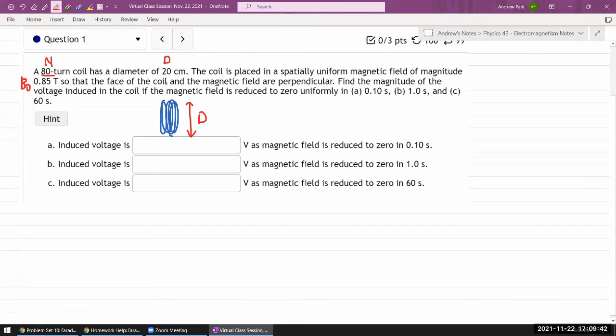The coil is placed in a spatially uniform magnetic field of some magnitude. Let me call this B naught. So that the face of the coil and the magnetic field are perpendicular. Yeah, so the direction that magnetic field goes in is this direction through the coil. That's my magnetic field. Find the magnitude of the voltage induced in the coil if the magnetic field is reduced to zero uniformly in these different time periods. So call this delta T, for example.